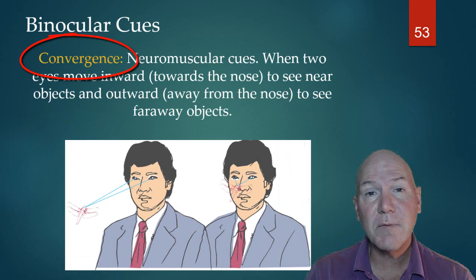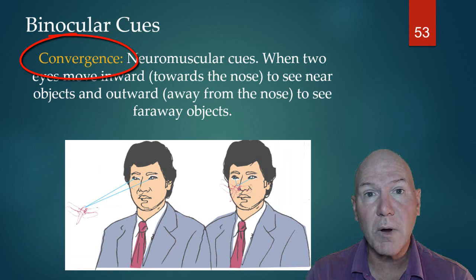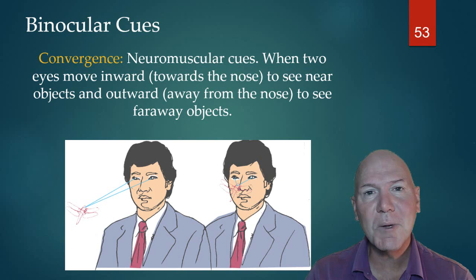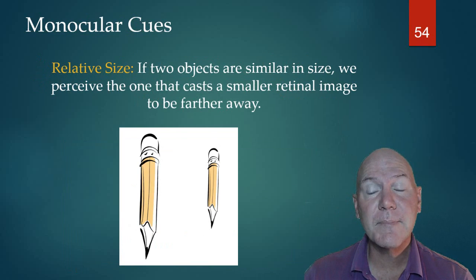Called convergence. Convergence is: as something is far away, your eyes are apart, and as it moves closer to you, you move your eyes in closer to it. Your brain actually reads how far those muscles move your eyes in and it tells you how far away something is.